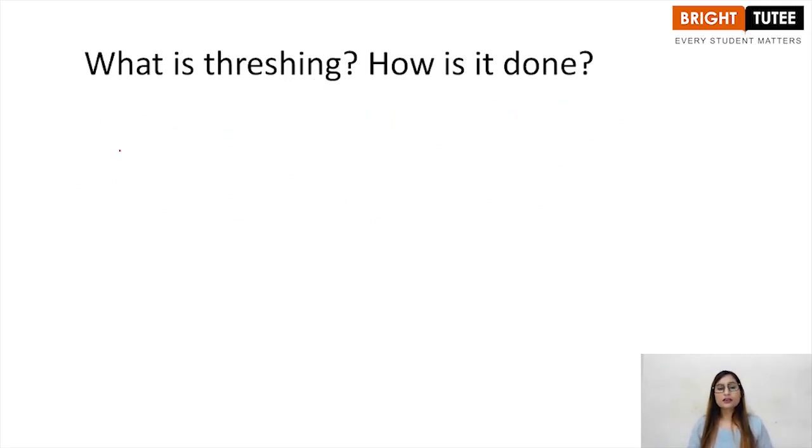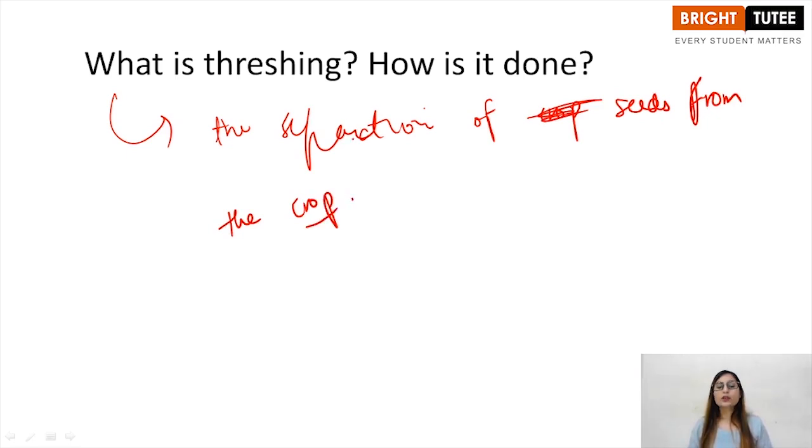What is threshing, how is it done? It is basically the separation of seeds from the crop. The crop includes the plant, the whole plant. After harvesting is done, the plant is cut from the bottom, from the surface. The seeds are present on the branches. You do not require the whole plant, you only need the seeds. So the separation of these seeds from this plant is known as threshing.